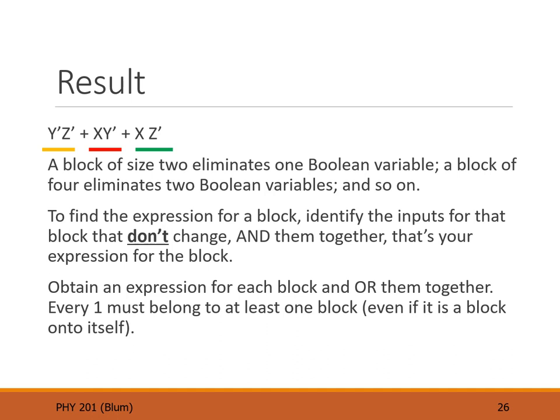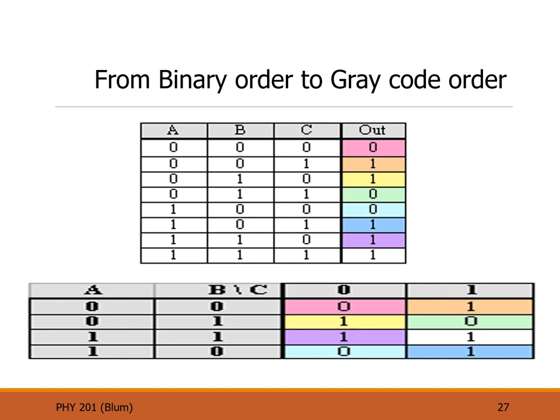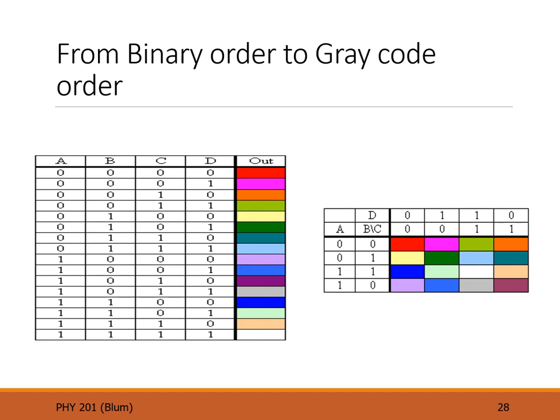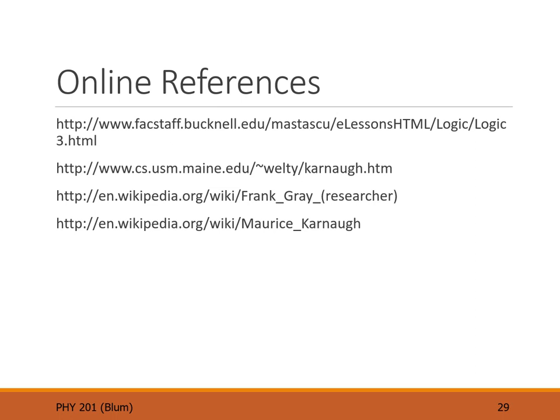Here I'm using color coding to show the mapping from binary-coded outputs to gray code-ordered outputs, and the mapping from binary order to gray code order for the four-input table. This whole Karnaugh map thing looks confusing at first, but you have to compare it to the simplification algebra you would otherwise have to do, and then you will begin to appreciate the simple visualization that Karnaugh provided.